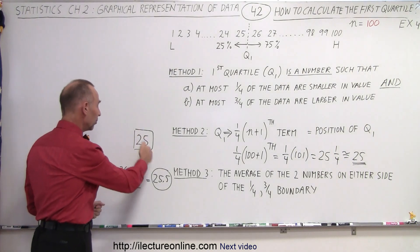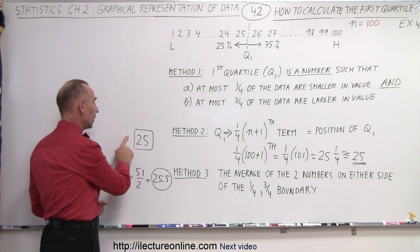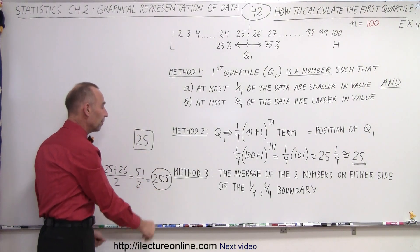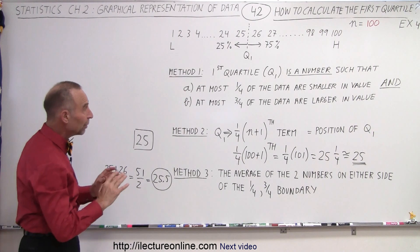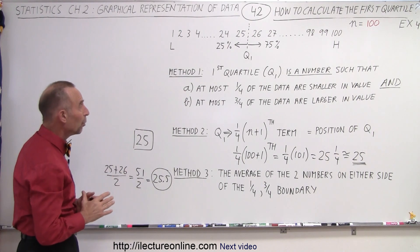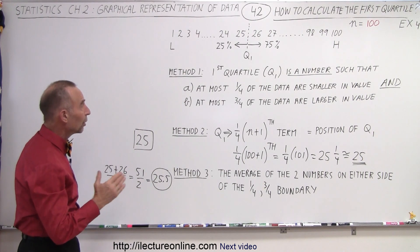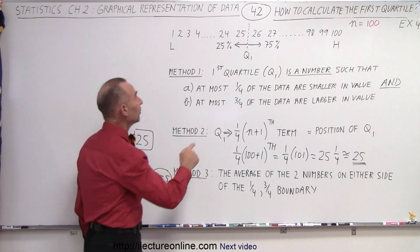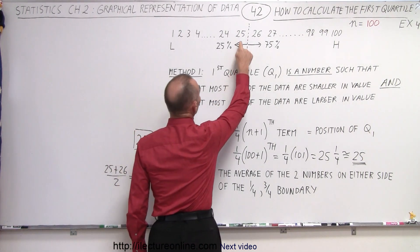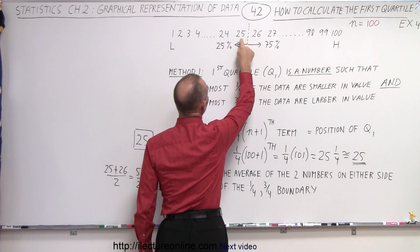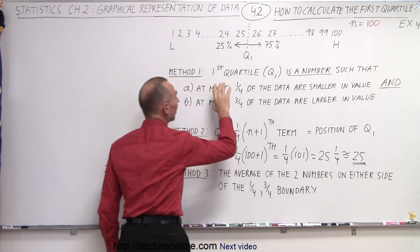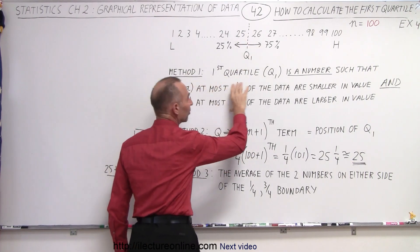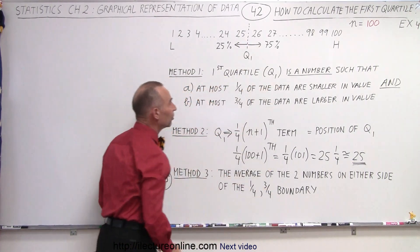You can see you get very similar results for method 2 as you do for method 3. Now for method 1, we need to think a little bit more. We're going to take both points on either side of that boundary — 25 and 26 — and see if each satisfies the two conditions.